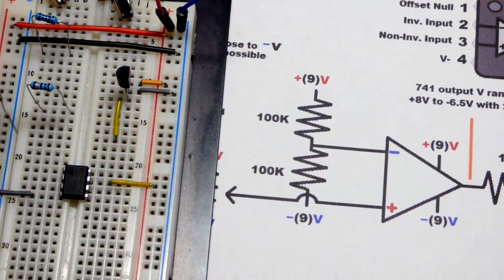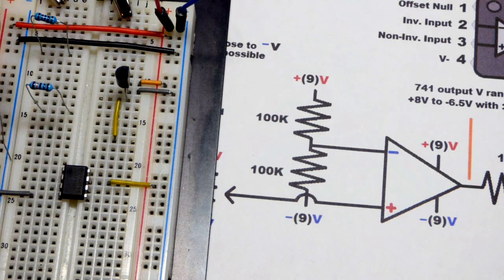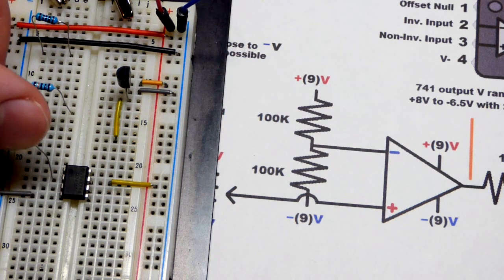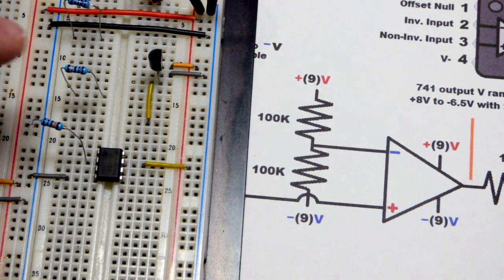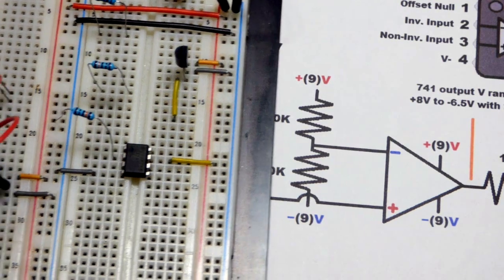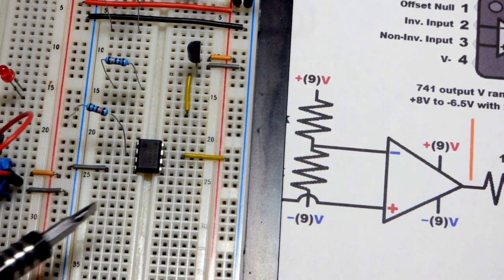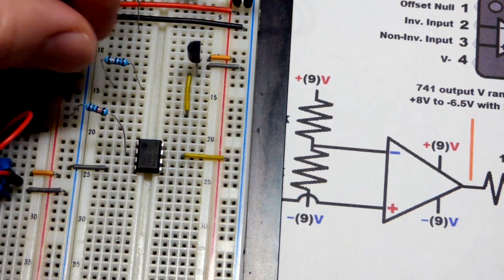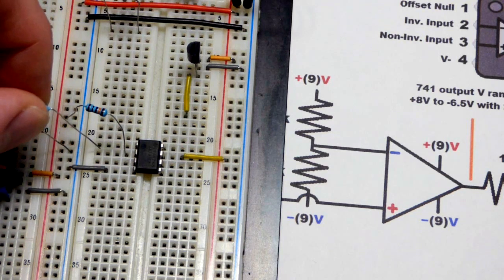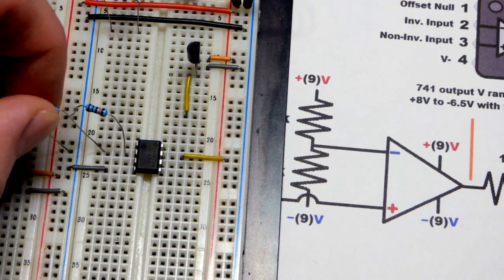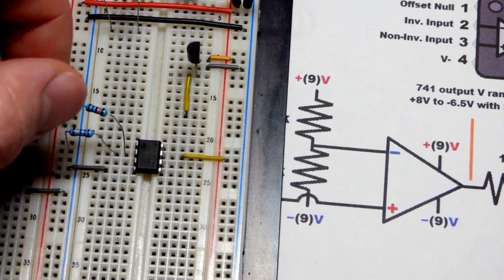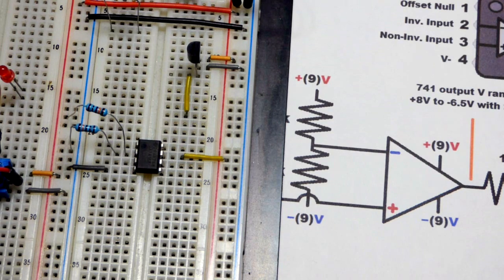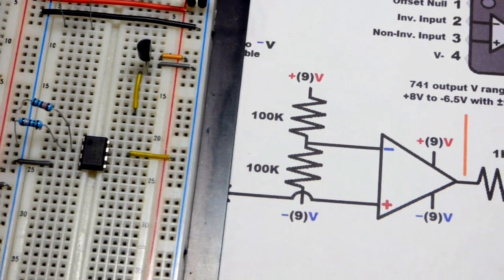We're going to take a 100,000 ohm resistor. How much current going through here is not important other than how hot the resistors will get. The input lets practically no current through it - it does not depend on any current, it just looks at the voltage. So you can use high value resistors and you'll be just fine. These are 100,000 ohm resistors.